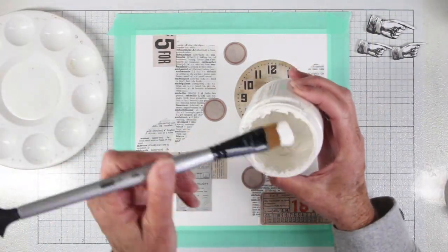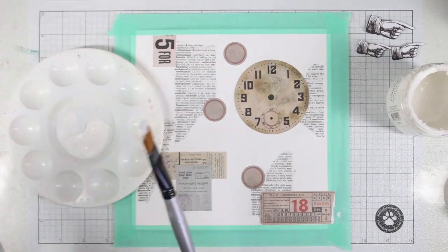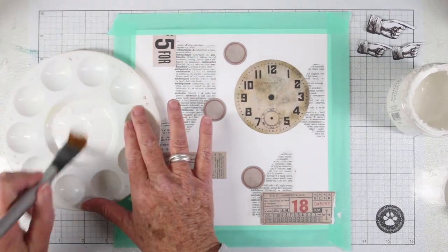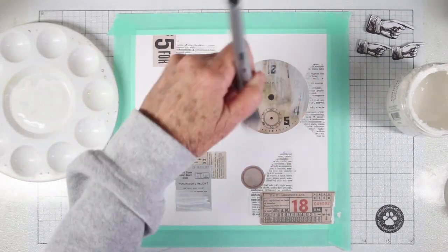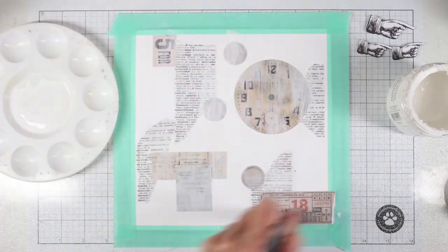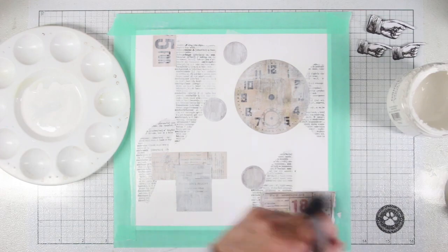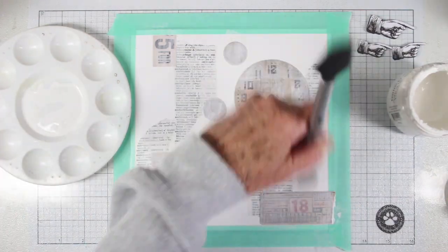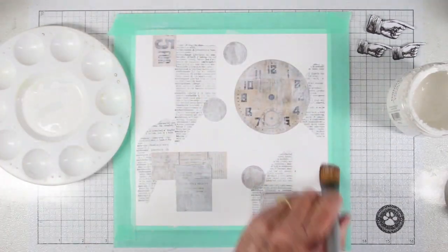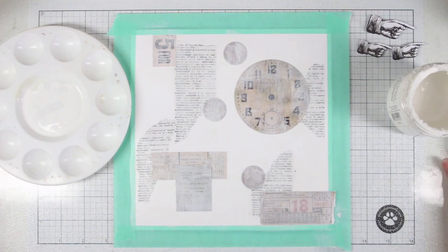I've given my matte gel a chance to dry a little bit. Right now I'm using some gesso with a little bit of water and I am whitewashing. I don't want to cover up all of my pieces, but I just want to give them an even layer of the gesso, just to whitewash to where you can still see the words come through and some of the numbers from the clock.